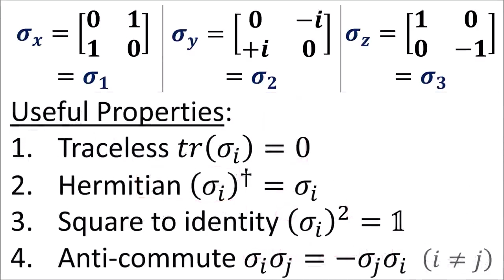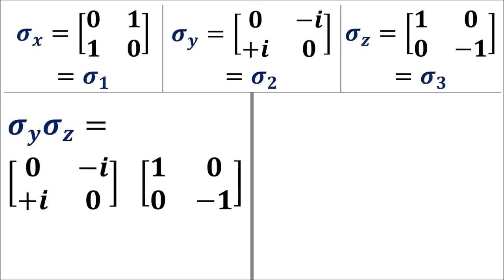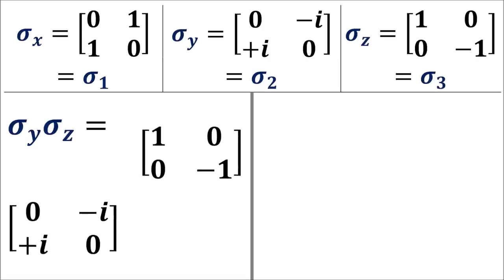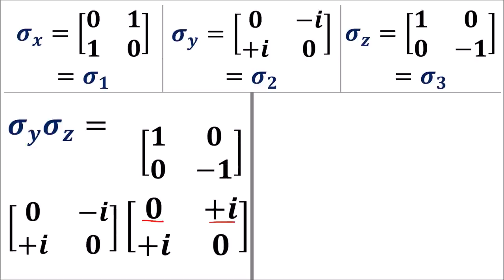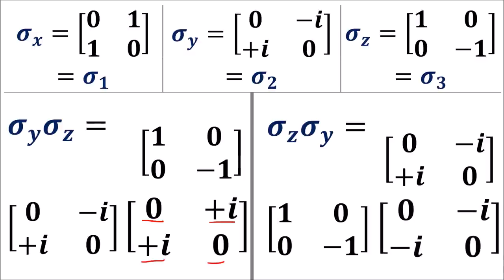The final property is that, given the product of two different sigma matrices, this product equals the negative of the same two sigma matrices multiplied in the opposite order. I'll show this explicitly for sigma y times sigma z, which gives the components 0, i, i, and 0. If we reverse the product and do sigma z times sigma y, we get the components 0, negative i, negative i, and 0, which is the negative of the result we got before.